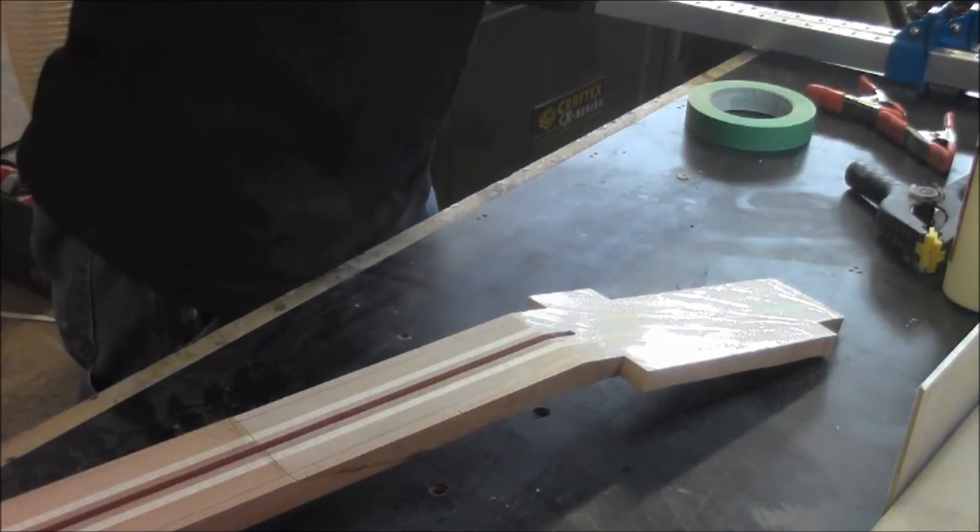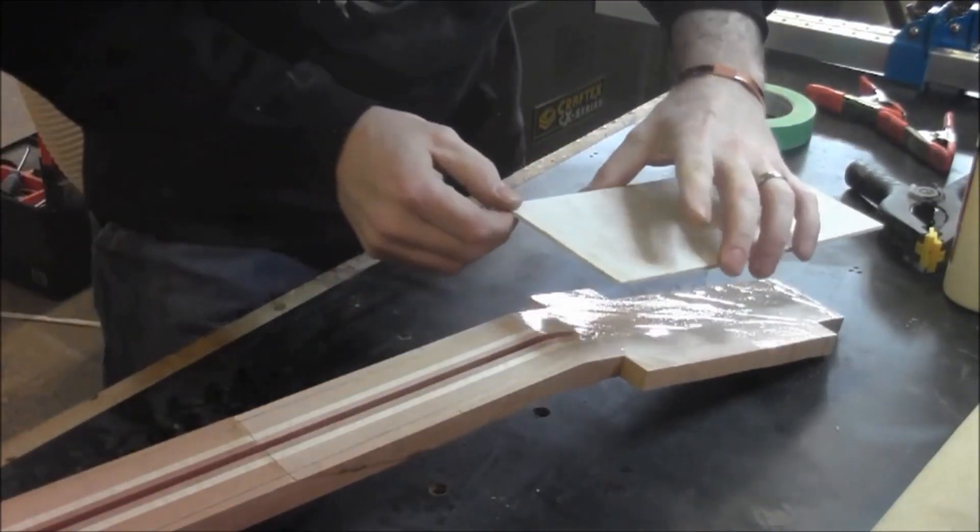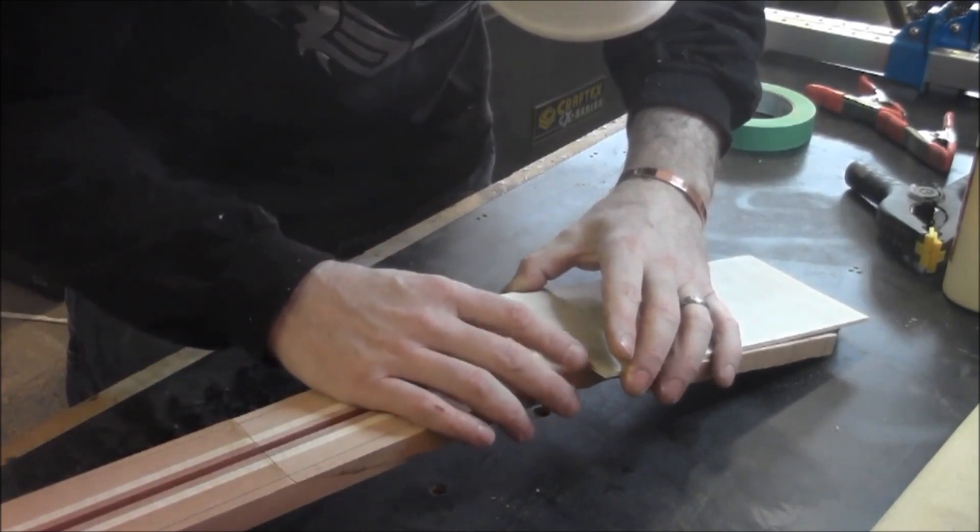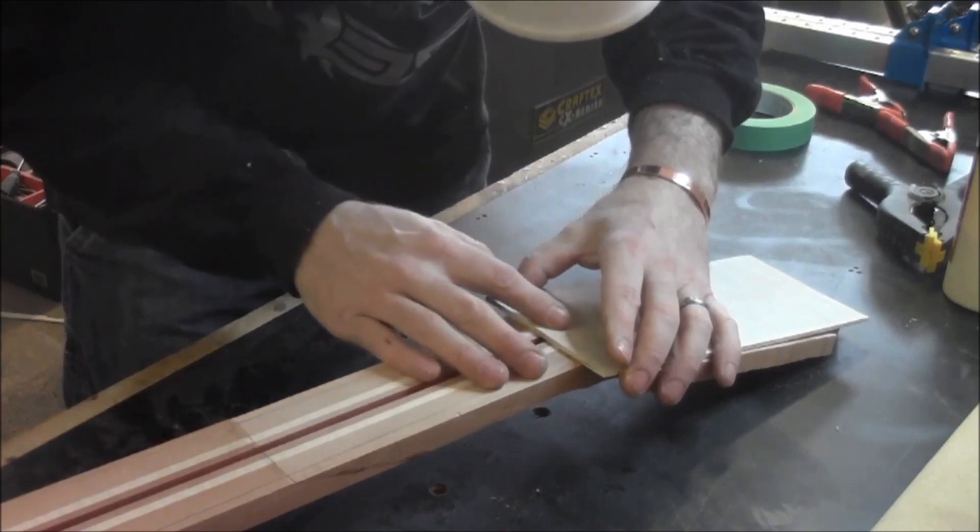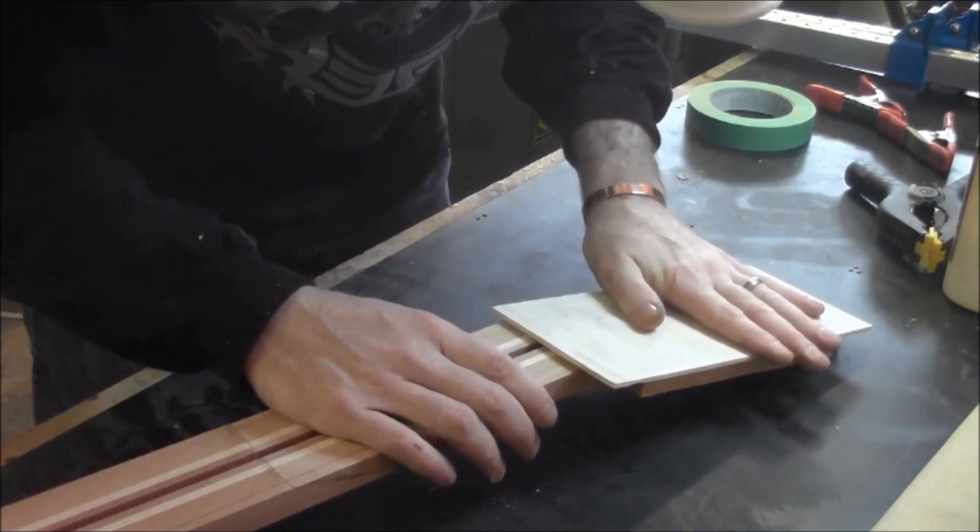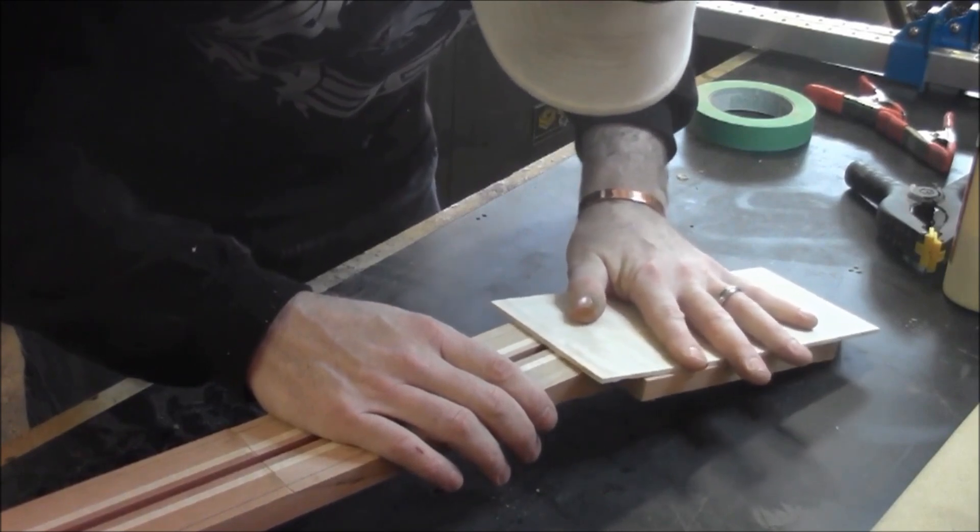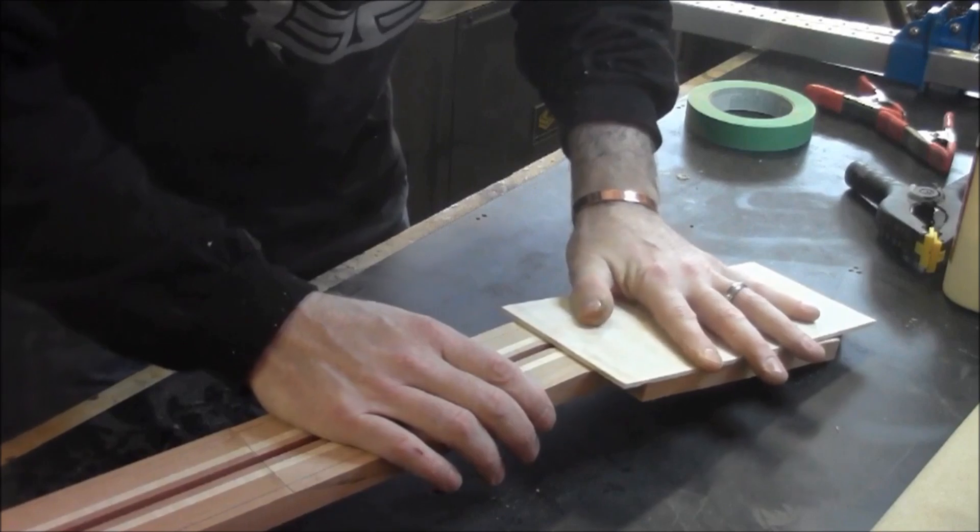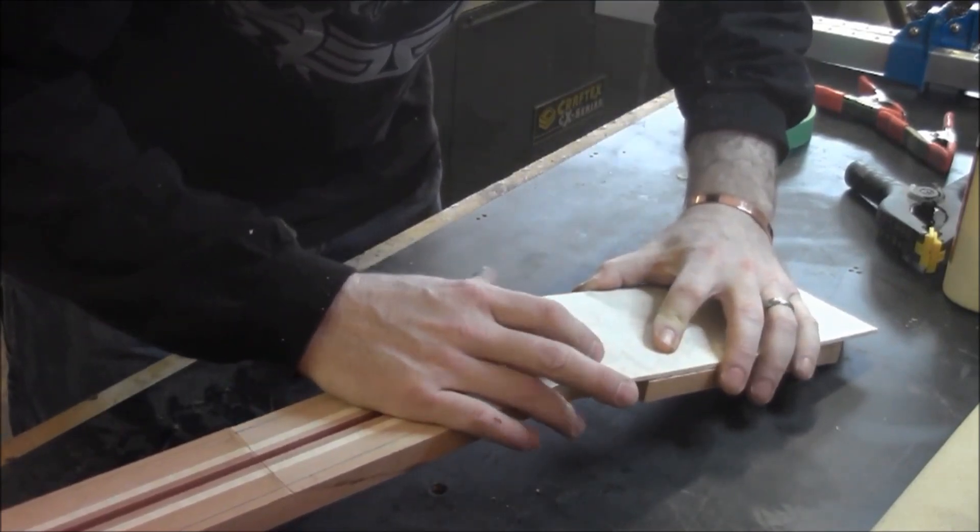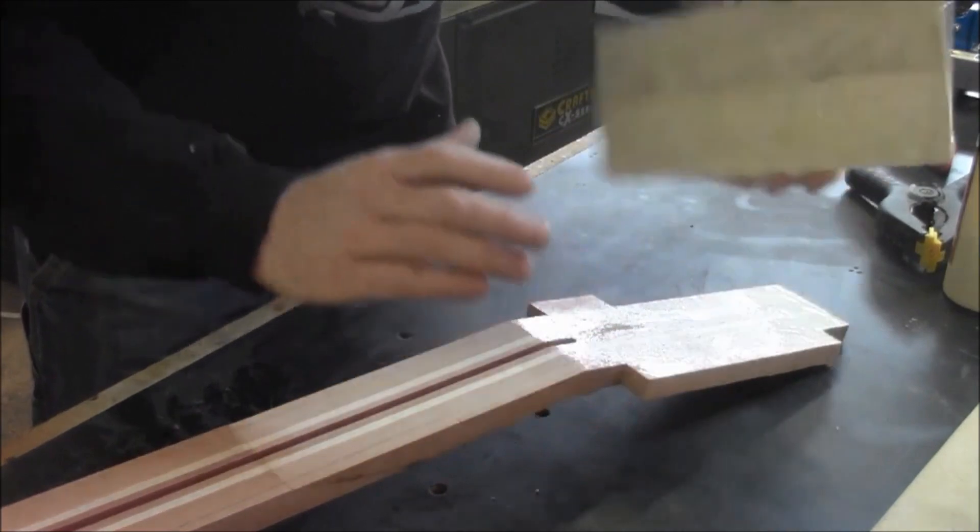Now we're going to take one of our clamps and set this where we need to be. We want to make sure the edge is even with where that slope starts—even if it's a little bit proud, that's fine too. We just want to get that line established. I'll slide this around a bit to let the glue stiffen up.